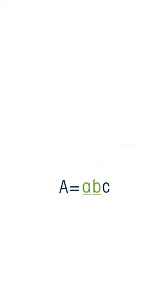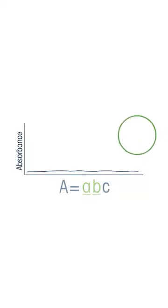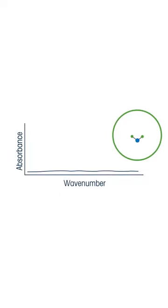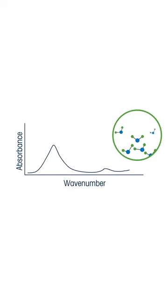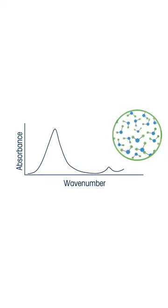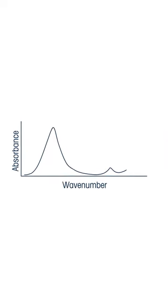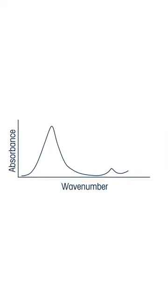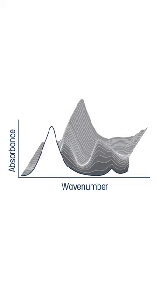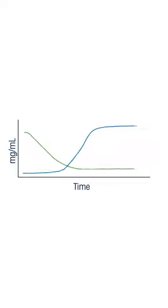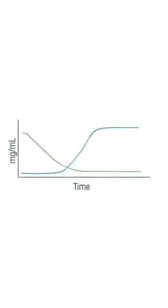So the absorbance at a vibrational frequency for a specific bond is directly proportional to the number of that specific bond, or concentration. Once calibrated, much like HPLC, each measurement by the FTIR instrument will be quantitative for the reaction components it was calibrated to measure.